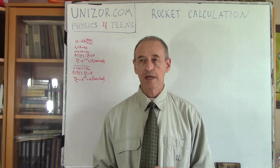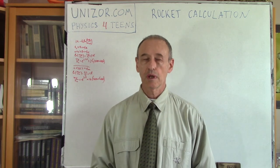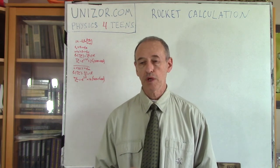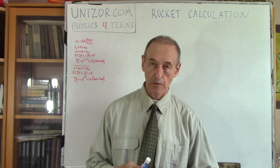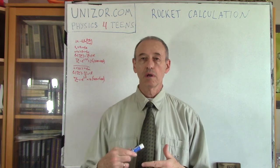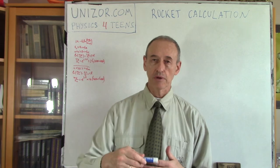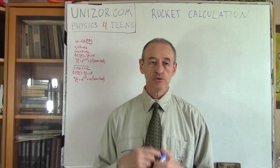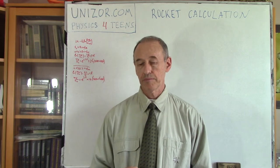The previous lecture was dedicated to the ideal rocket equation or formula of Tsiolkovsky. Basically, it's a very simple equation which combines together the increment of the speed of the rocket and the ratio of the mass of the rocket before with the fuel, with the propellant, and after a certain amount of time when the propellant is exhausted. Today I would like to use this formula to make a couple of very simple calculations.